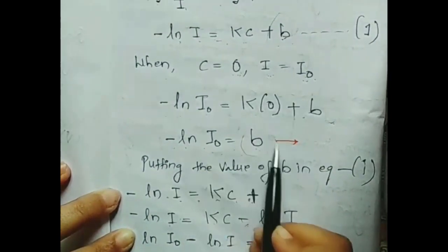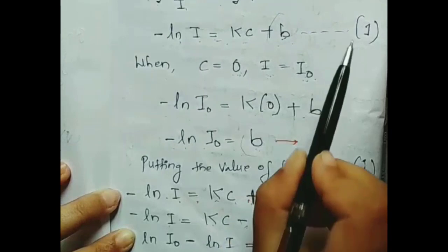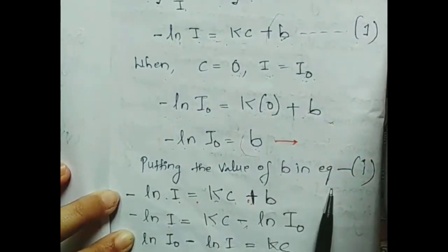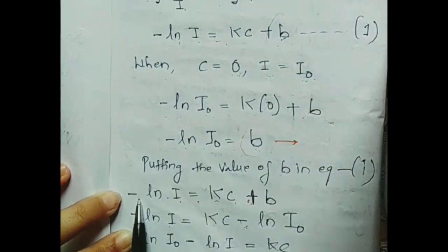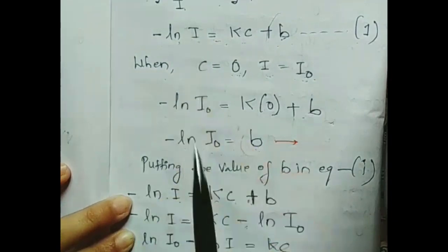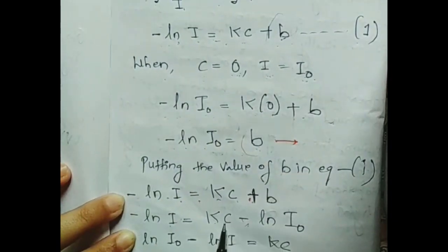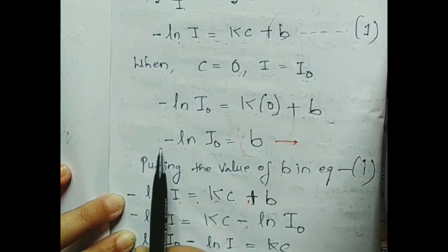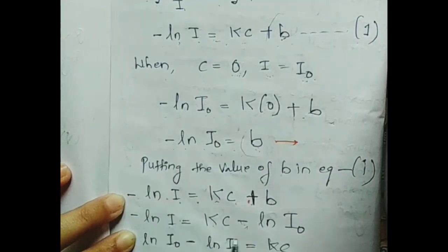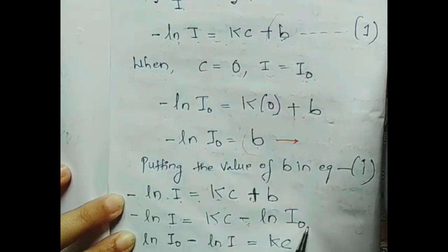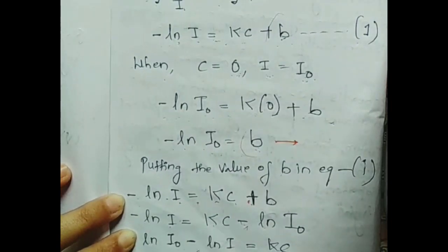Therefore minus ln I naught equals B. Substituting back: minus ln I equals KC plus B, which gives minus ln I equals KC minus ln I naught. Rearranging: ln I naught minus ln I equals KC.